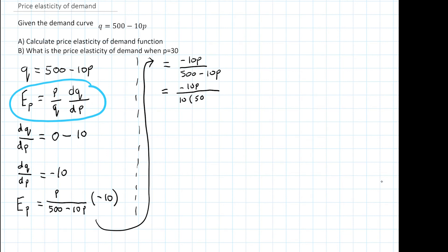And we can simplify this by taking 10 as a common factor. So minus 10p over 10 open bracket 50 minus p means we can of course cancel these two tens, and that results in minus p over 50 minus p, which is of course our price elasticity of demand function that we were asked to find in part a.